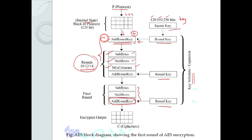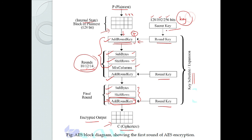In a regular round: Add Round Key, Substitute Bytes, Shift Rows, and Mix Columns. In the final round — round 10, 12, or 14 — Mix Columns is replaced with Add Round Key. After all rounds, we obtain the Cipher Text. On the receiver side, the same key is used in reverse order to decrypt. That is why AES is called symmetric encryption.